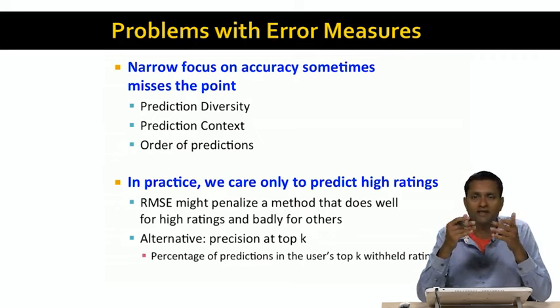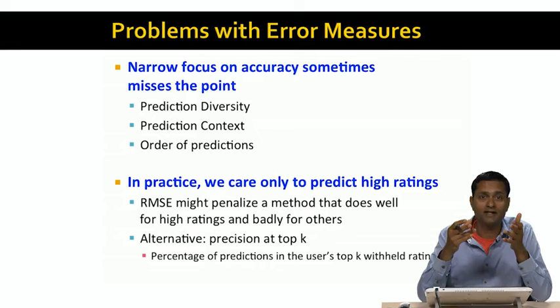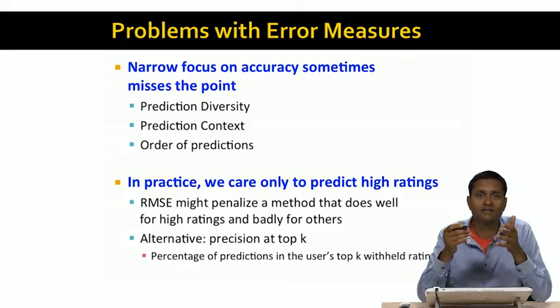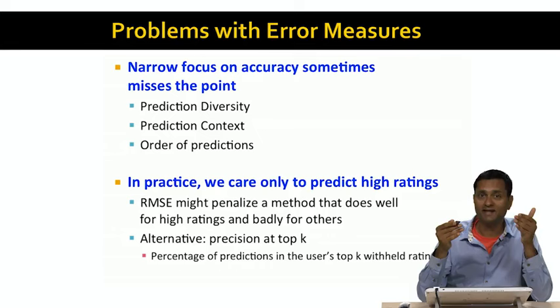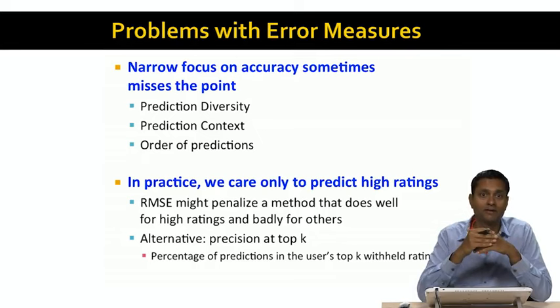that recommends really good items to users, but actually makes bad errors on items that the user doesn't really like. Now, this algorithm might work really well in practice, but its root mean square error evaluation will look really bad.